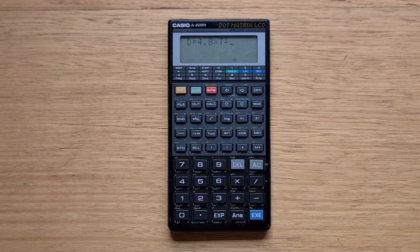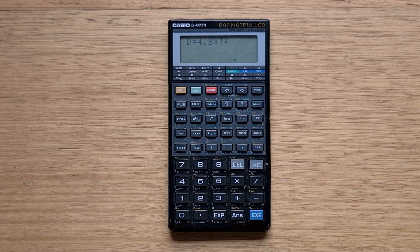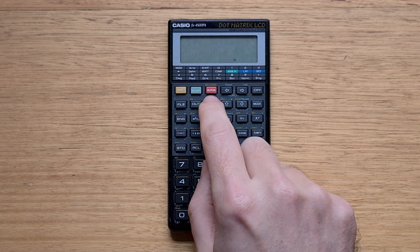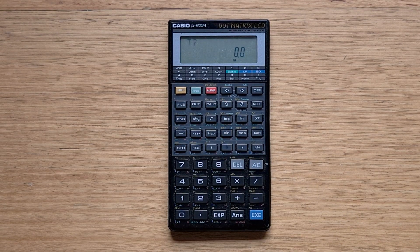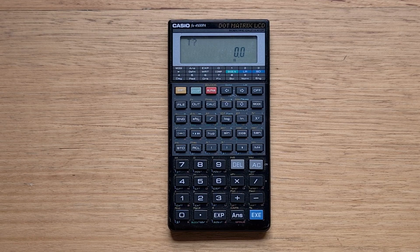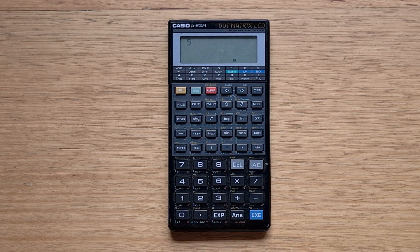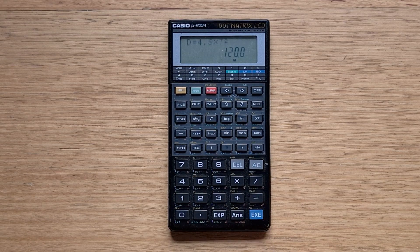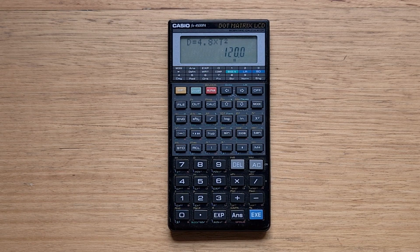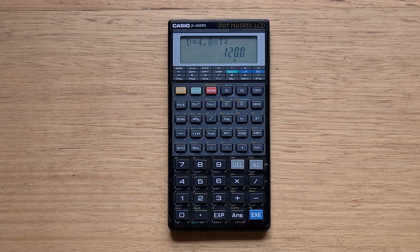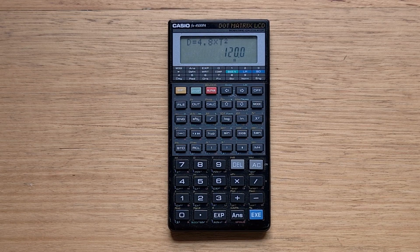The 4500P has a simple but useful formula memory. If I hit out, you can see I've entered my favorite fall distance equation. To evaluate the formula, we can hit calc and get prompted for the right hand side variable. Let's enter t equals five seconds, and so the object falls 120 meters. This feature is quite useful, but it's limited since you can only store a single formula.